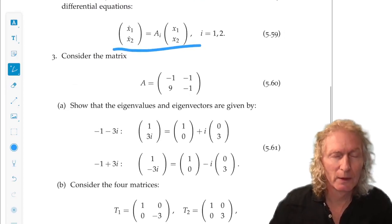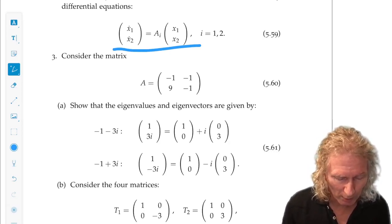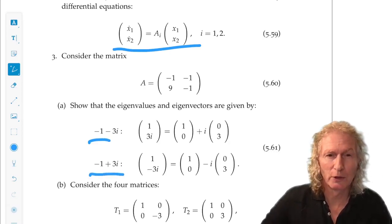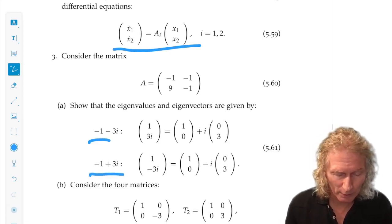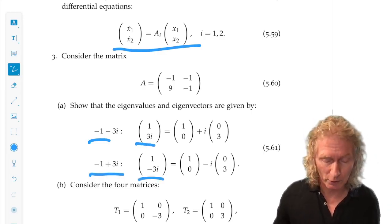Now problem 3 is an example that you've already seen. We know that it has two complex eigenvalues, they're complex conjugates of each other, and we computed the eigenvectors for each eigenvalue, and you can see they're complex conjugates of each other.